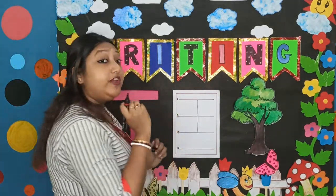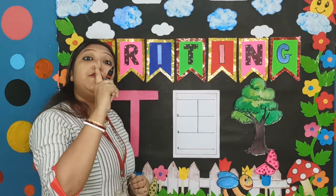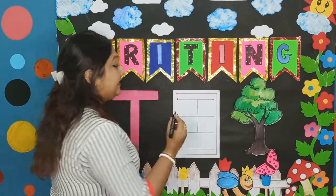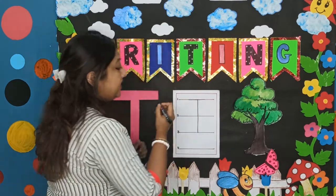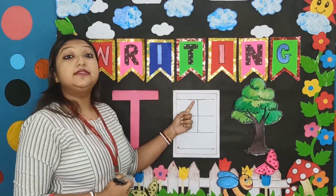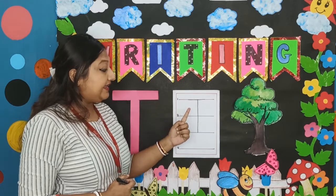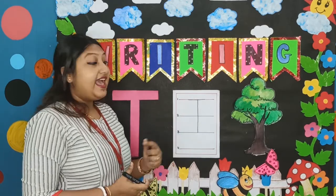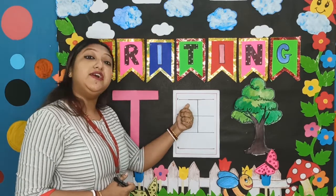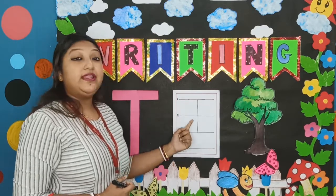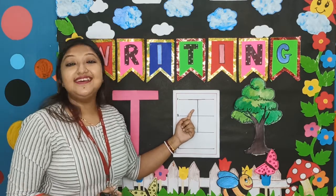On which line will I draw the sleeping line? I will draw it on the first line. So I have drawn the standing line from the first line to the third line, and I have drawn the sleeping line on the first line. This is our letter T.